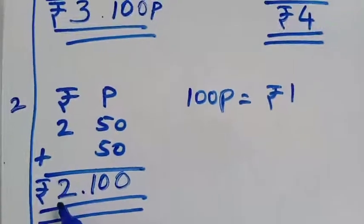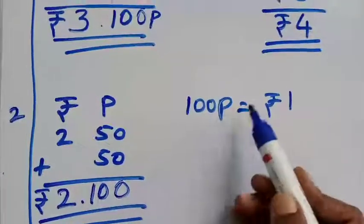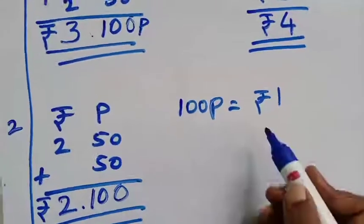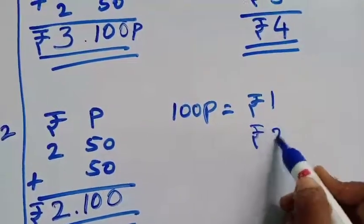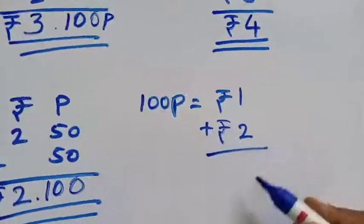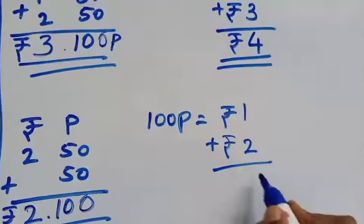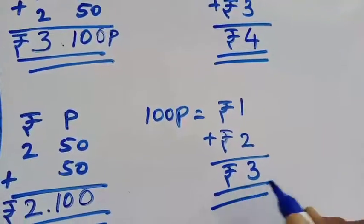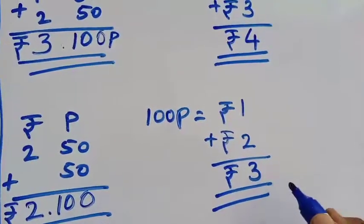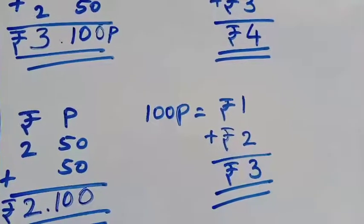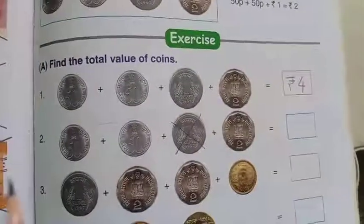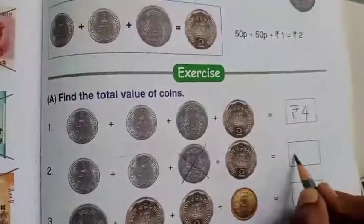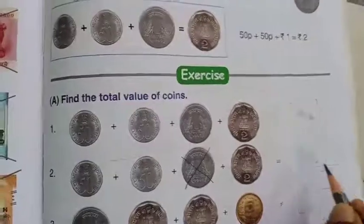We already wrote that 100 paise = ₹1, so we're left with ₹2. Write ₹2 below and add: 2 + 1 = 3. The total answer is ₹3. Let's write it in the box: 50p + 50p + ₹2 = ₹3.